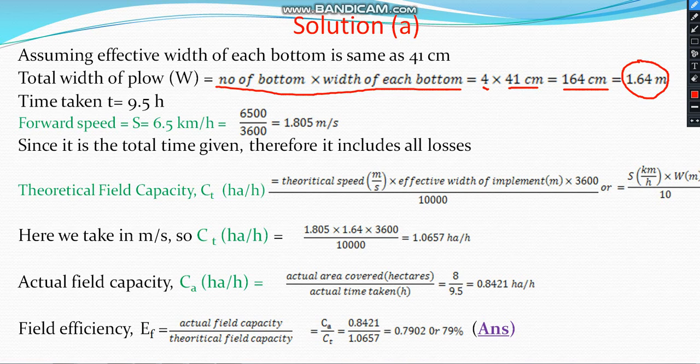Time taken is given as T = 9.5 hours. The forward speed is 6.5 km per hour. To convert it to meters per second, you multiply by 1000 per kilometer and divide by 3600 per second, which gives 1.805 m/s as the forward speed. Since total time is given, it includes all the losses, so it will be used for the actual field capacity.